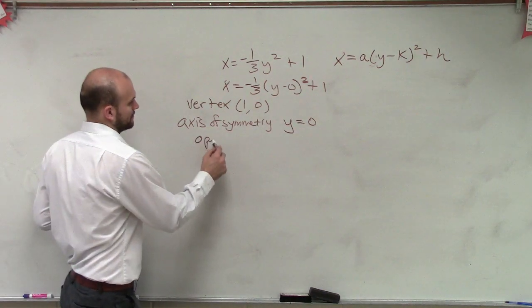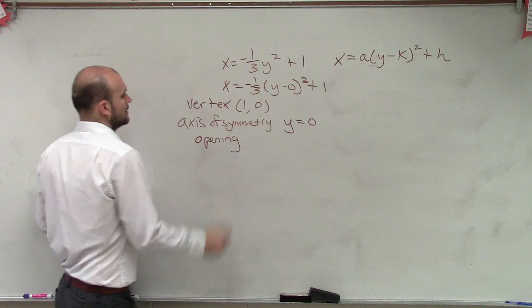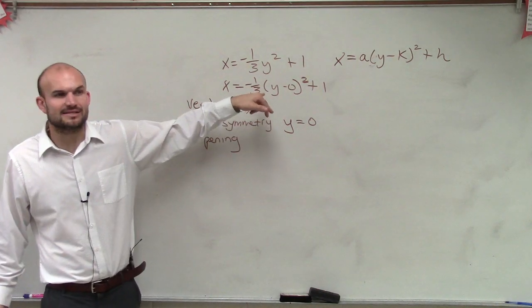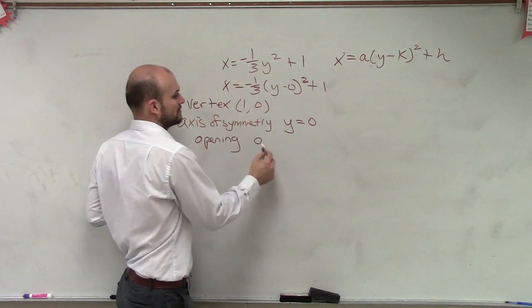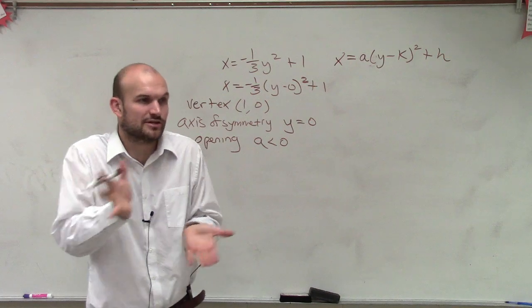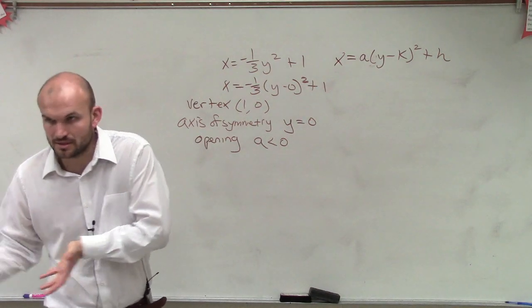Now, let's look at the opening. So we look at the opening. And is my a greater than 0 or less than 0? Negative 1 third. So a is less than 0. So that means, since it's horizontal, if it's less than 0, does it open to the right or to the left? Left.